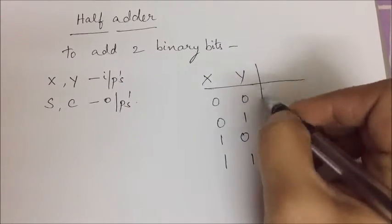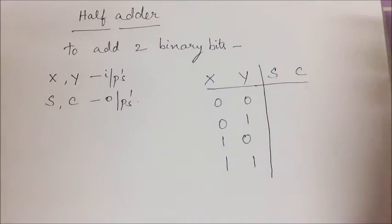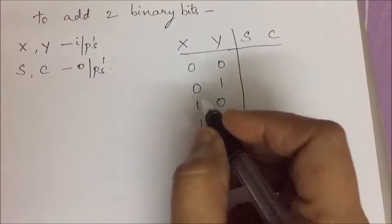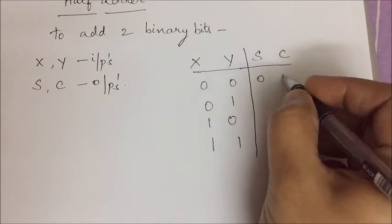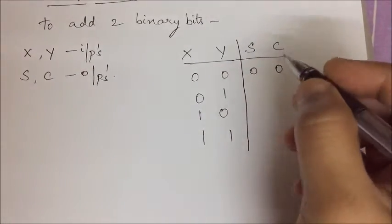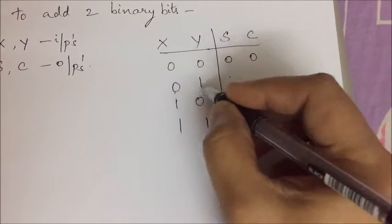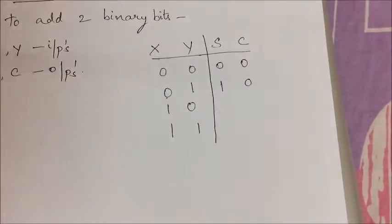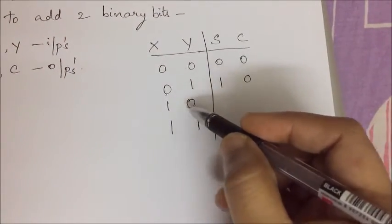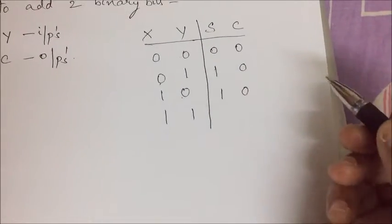Now when we are adding these combinations x and y we will have sum and carry. So 0 plus 0 will have sum as 0 and carry as 0. When x is 0 and y is 1, 0 plus 1, sum is 1, carry is 0. And when x is 1 and y is 0, again sum is 1 and carry is 0.